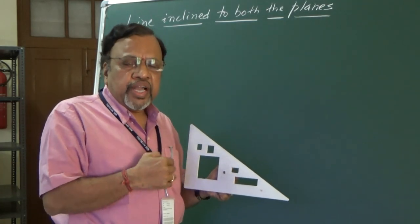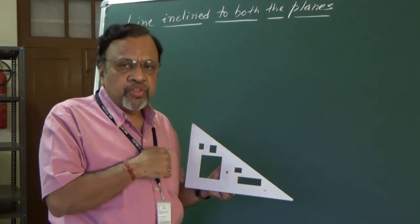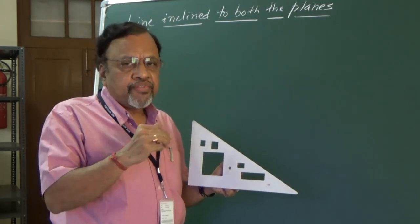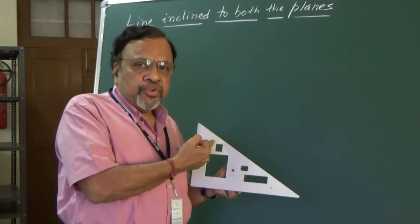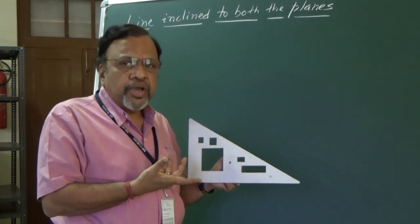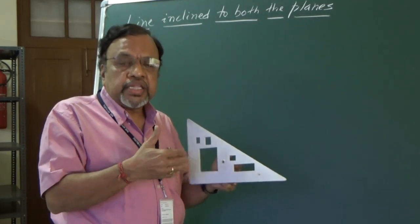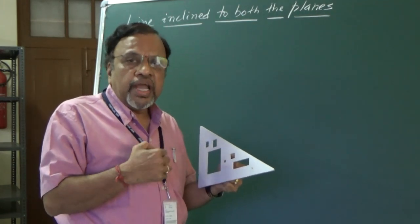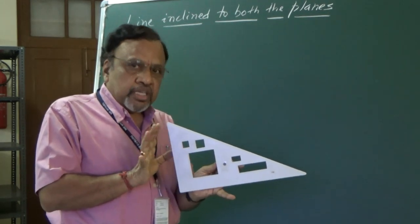In the second case, when the line is inclined to VP and parallel to HP, since the line is parallel to HP its true length is seen in the top view at true angle phi. Since the line is inclined to VP, in the front view it will be foreshortened, and that length — the length of the front view, LFV — is parallel to XY. When a line is inclined to a particular plane, its corresponding length is foreshortened, which we call the apparent length, LTV or LFV.